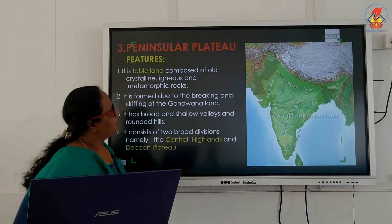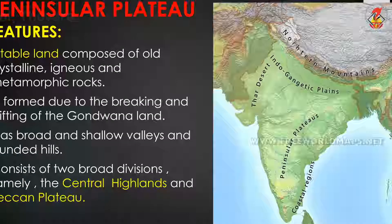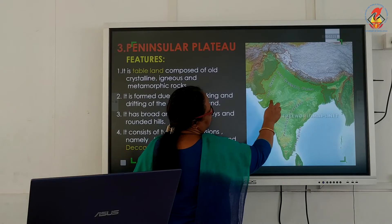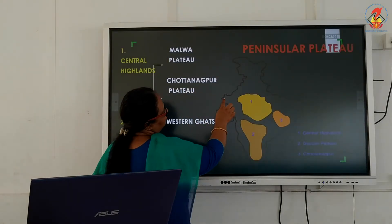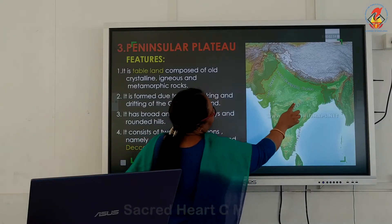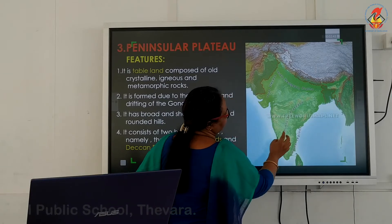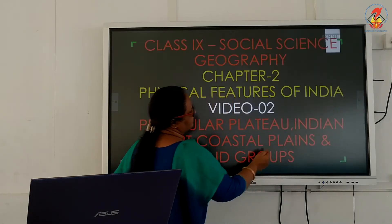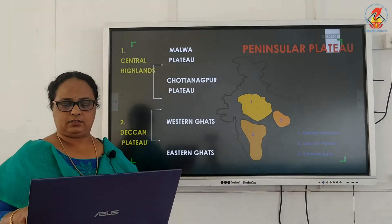Looking at the map, the northernmost part includes the Malwa plateau and the Chotanakpur plateau as parts of the central highlands. The Deccan plateau is divided into the western ghats and the eastern ghats, as shown in this flow chart of the peninsular plateau's division.